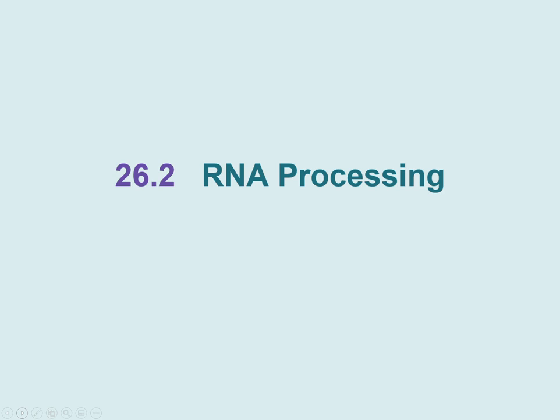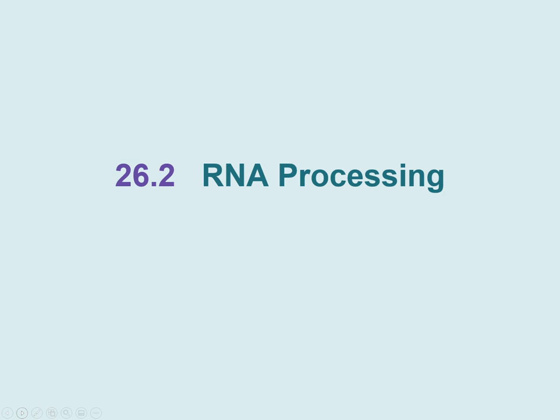Now we need to talk about what happens to RNA after it's made. RNAs are very susceptible to being degraded, so we have to protect them once they're made from all the nucleases in the cell. Pretty much all eukaryotic RNAs and lots of bacterial RNAs undergo processing. Processing could mean adding or deleting nucleotide sequences, chemical modifications like adding methyl groups, or degradation. Ribozymes can actually catalyze some of these post-transcriptional processing steps.